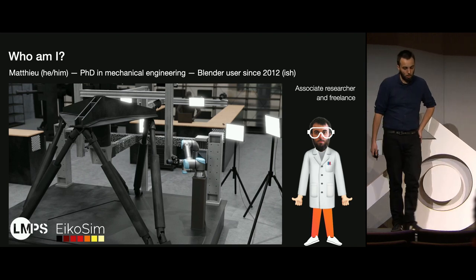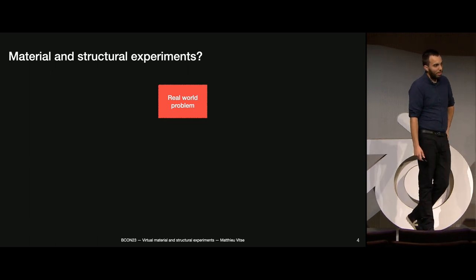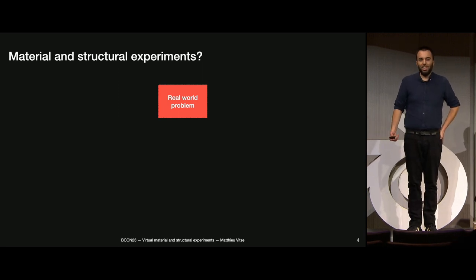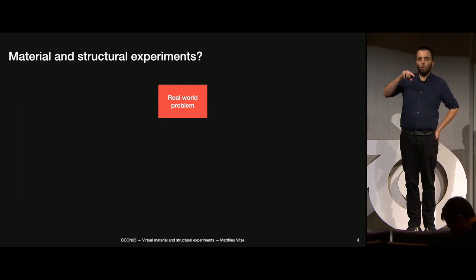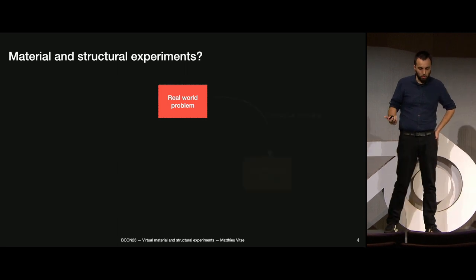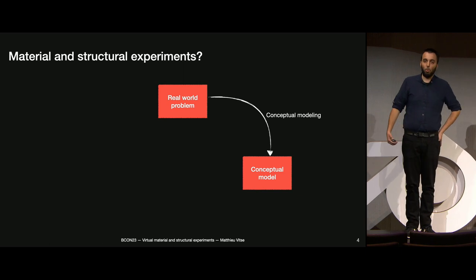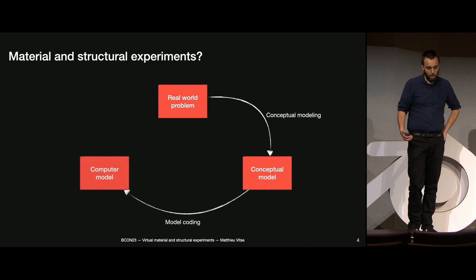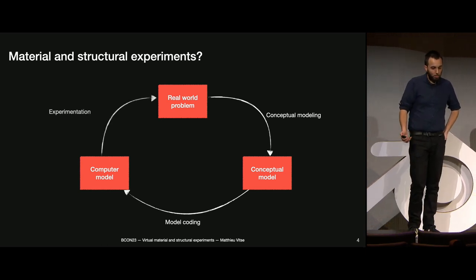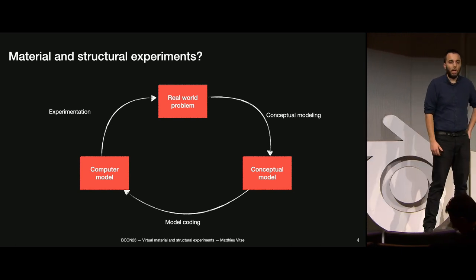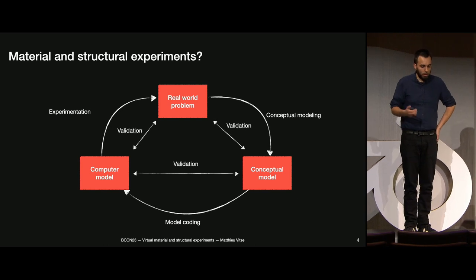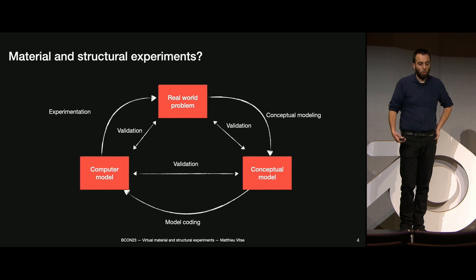Let me first explain what we call material and structural experiments. As researchers or engineers, we usually have to solve real-life problems — we see something that we want to understand. In our case, sometimes it would be the cracking in reinforced concrete; we want to predict and follow the tip of a crack going along a beam. The first stage consists in conceptualizing the problem, basically making a mathematical model of the phenomenon. Once this is done, we produce a computer model that translates the equations into code. Some experiments can then be performed, sometimes at different scales and different assumptions, to prove both the computer model and the mathematical model. During all these steps, multiple sets of data are generated in order to validate the whole process.